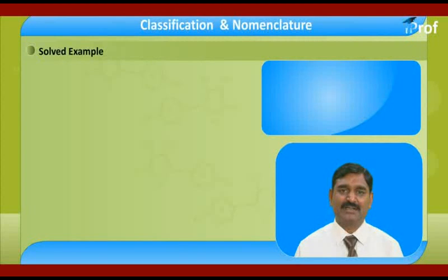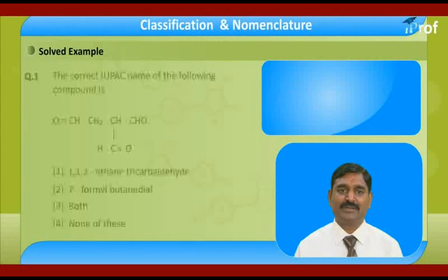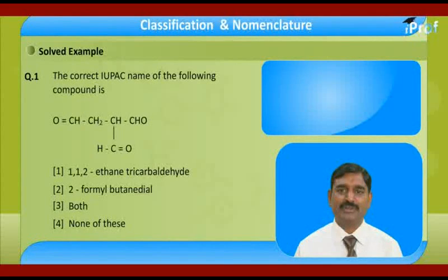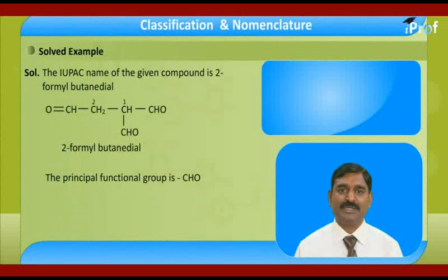Numbering starts from the first carbon. The first carbon is attached with 2 CHO groups. This is an ethane substituted compound, and the correct name is ethane-1,1,2,3-carbaldehyde. The name 2-formyl-butene-di-enal is not correct. That's why the correct name is ethane-1,1,2-3-carbaldehyde.